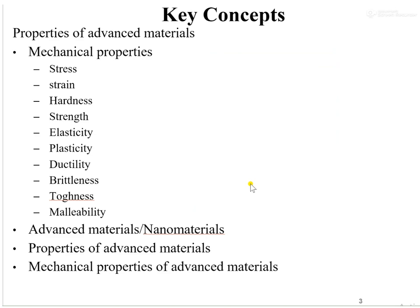Key concepts discussed in previous lectures are mechanical properties of advanced materials. First we discussed general properties of advanced materials, then mechanical properties. In mechanical properties we discussed different terms: stress, strain, hardness, strength, elasticity, plasticity, ductility, brittleness, toughness, and malleability. When we talk about mechanical properties, all these terms we should know.